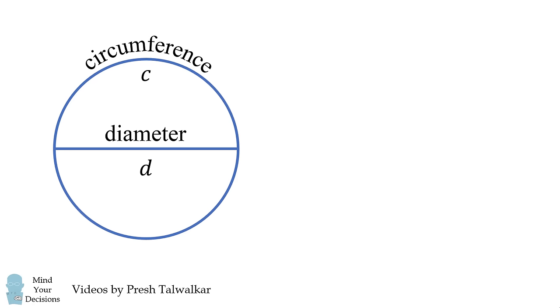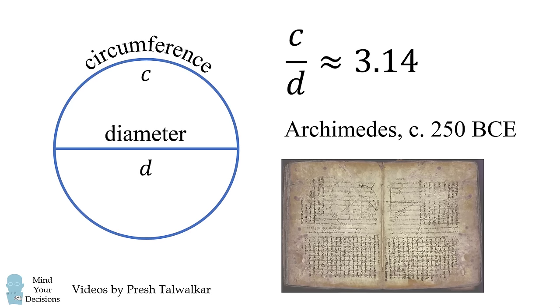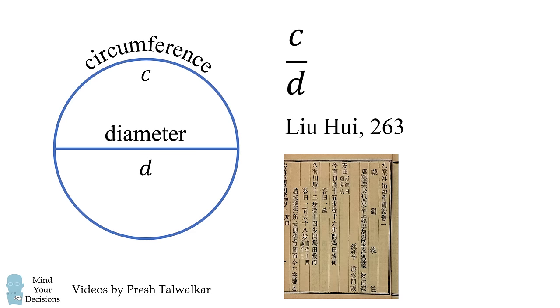For thousands of years, mathematicians have been fascinated by the ratio of a circle's circumference C to its diameter D. The ancient calculation of this ratio comes from famous mathematicians whose names should be known to everyone. This includes Archimedes in Greece, who estimated 3.14, Aryabhata in India, who estimated 3.1416, and Zu Chongzhi in China, who estimated 3.14159. This was a world record calculation not surpassed for another 1200 years.